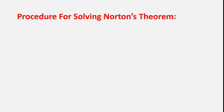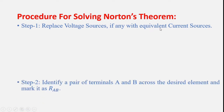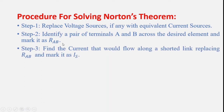Procedure for solving Norton's theorem. Step 1: Replace voltage sources with equivalent current sources. Step 2: Identify a pair of terminals A and B across the desired elements and mark it as RAB. Step 3: Find the current that would flow along the shorted link replacing RAB and mark it as IS.